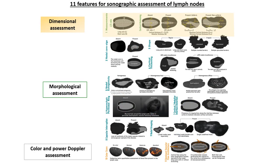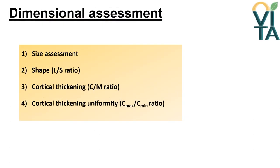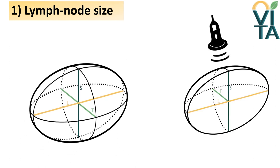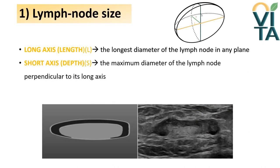Starting from a quantitative evaluation, the dimensional assessment is used to define the lymph node's size, shape, and the presence and uniformity of cortical thickening. The size of the lymph node is defined by three diameters in two orthogonal planes. The examination starts from the longitudinal plane where the longest nodal diameter is seen and the perpendicular short axis is at its maximum. On this plane, the visible diameters are length and depth. The length represents the longest diameter of the lymph node in any plane, while depth is the maximum diameter perpendicular to its long axis.